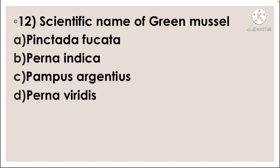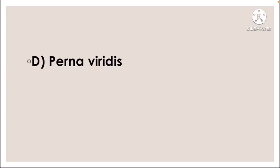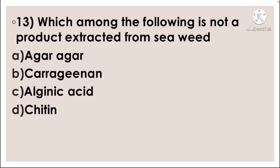Next question: Scientific name of green mussel — option A Pintada fucata, option B Perna indica, option C Pampus argenteus, option D Perna viridis. The correct answer is option D, Perna viridis.